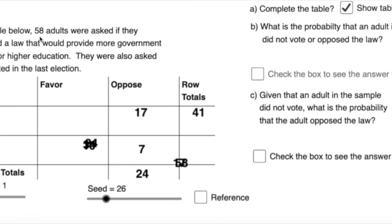This one is about adults who were asked if they supported a law that would provide more government support for higher education. Basically, would you support a law that lets the government pay more college tuition? It's a very topical subject. They were also asked if they voted in the last election. Sometimes people who don't vote have different opinions than people who do vote. A lot of times the goal with two-way tables is to determine if there's a connection between our two variables.